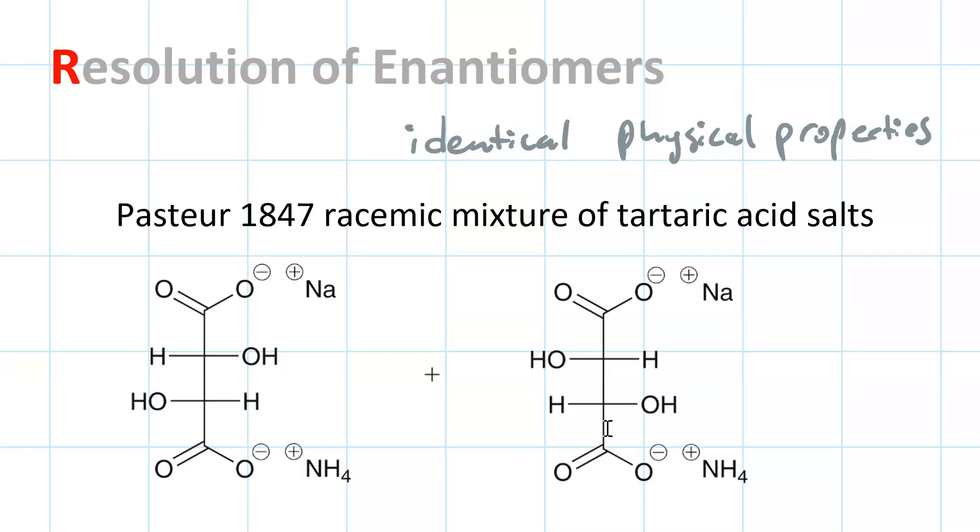But the vast majority of the time, if you have a racemic mixture, that is a 50-50 mixture of two enantiomers, you won't get any crystals. They can't crystallize when they're together.